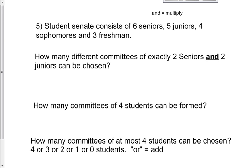Student Senate consists of six seniors, five juniors, four sophomores, and three freshmen. How many different committees of exactly two seniors and two juniors can be chosen? There's that word and again. I need to do a multiplication there. So I have seniors, and I'm only going to choose two of them. Six seniors total. 6C2 times five juniors, I have five juniors total, and I'm going to choose two of them. 6C2 times 5C2. You can use your triangle. It should be 15 times ten. 150.